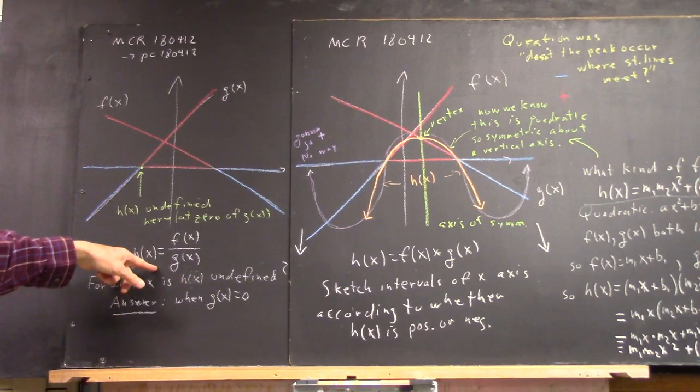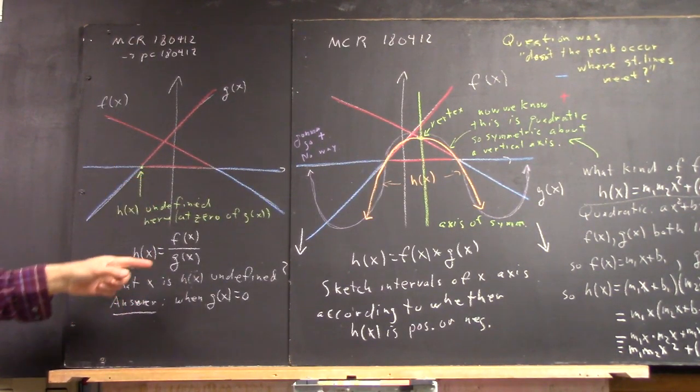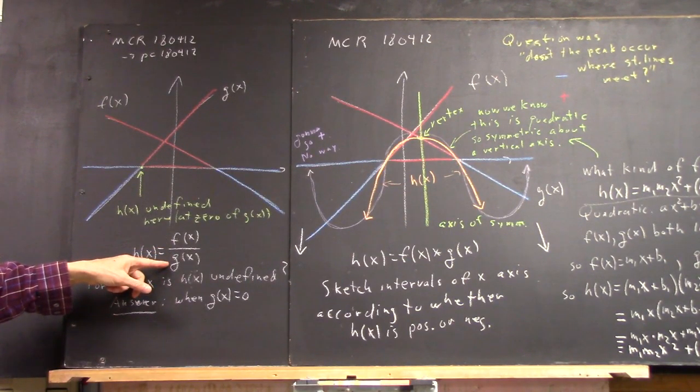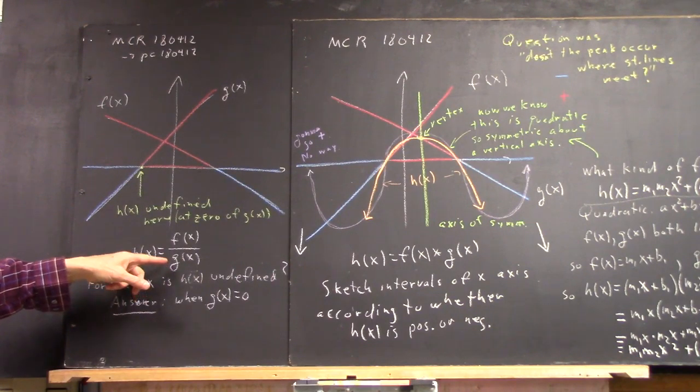Now, we established the first thing we really looked at when we started here in this class was that f of x over g of x isn't always defined. It's not defined if g of x is zero.